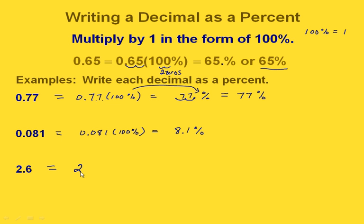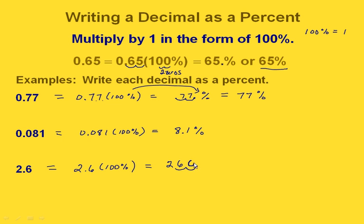And for this one, again we're moving our decimal point over two places. This time it's starting here, we move it over once, then one more place, and we have to put a zero in there as a placeholder. So we have 260 and then our decimal point and then our percent — we can just write this as 260%.